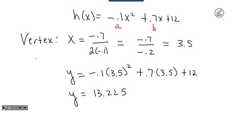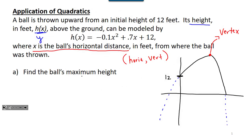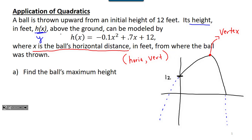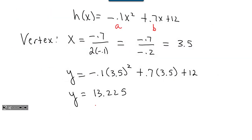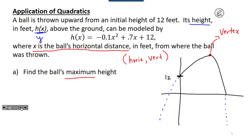Now let's answer the questions. Part a says find the ball's maximum height. Looking back, it says its height in feet is given by my y value, and it asks for the maximum, which tells me I'm looking for the vertex. Since height is the y value, the maximum height is 13.225 feet.